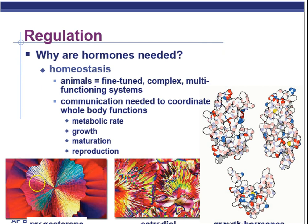Hormones are used to regulate the internal conditions of the body, and they have specific effects, even in small quantities. Most importantly, they're involved with homeostasis, or regulating the internal environment, maintaining a steady state condition. Animals have fine-tuned, complex, multifunctioning systems that are interconnected, and communication between these different places in the body is important. We need to regulate things like our metabolic rate, or how fast we break down things like glucose, and make different things like muscle tissue.